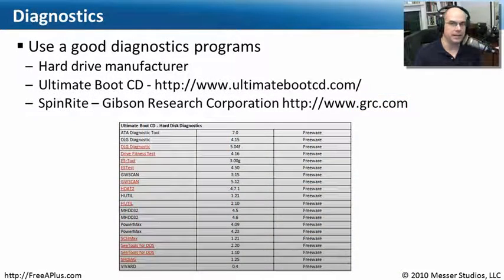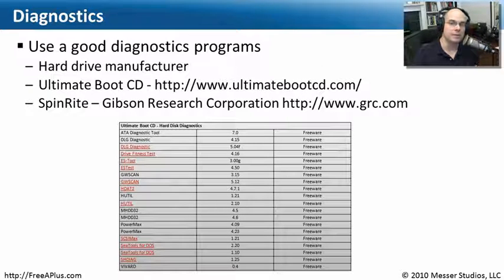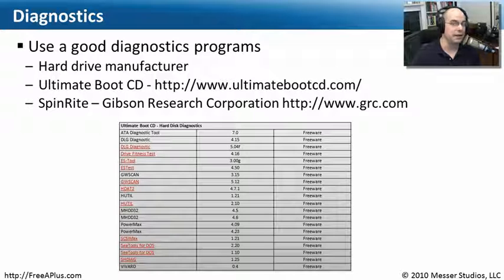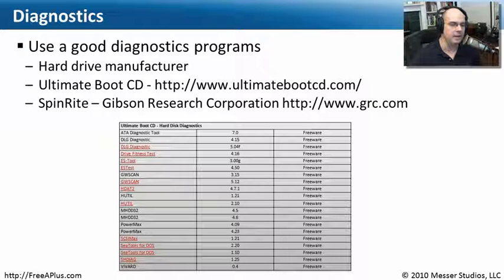Ultimately you may need to run some diagnostic software. You can usually find hard drive diagnostic software from the manufacturer of your hard drive — download it directly from their website or find it included in the box. If you don't have that, consider the Ultimate Boot CD at www.ultimatebootcd.com, which has a number of absolutely free utilities for testing hard drives, memory, and much more. If you need a professional paid tool that can recover information from a hard drive, consider Spinrite from Gibson Research Corporation — some of the best software out there for this. You can find it at www.grc.com or just Google Spinrite.